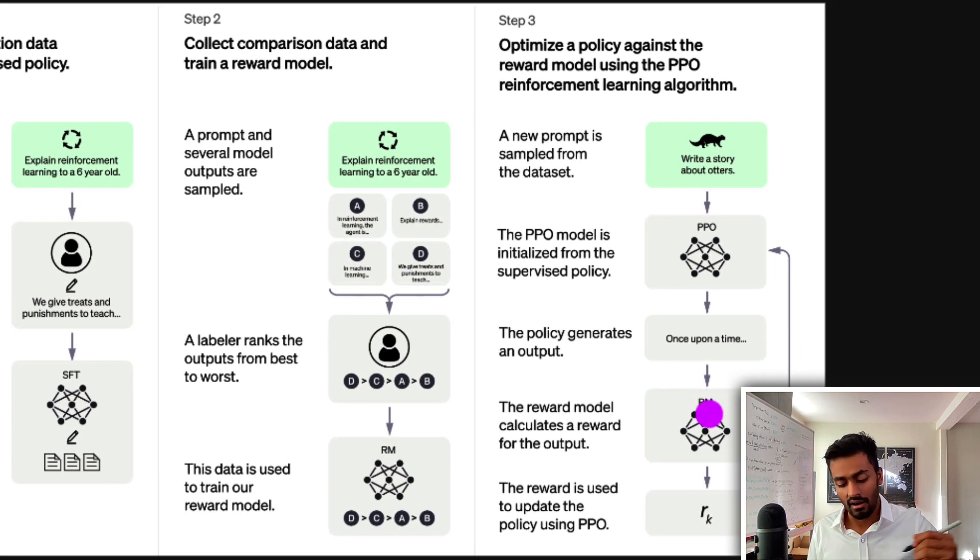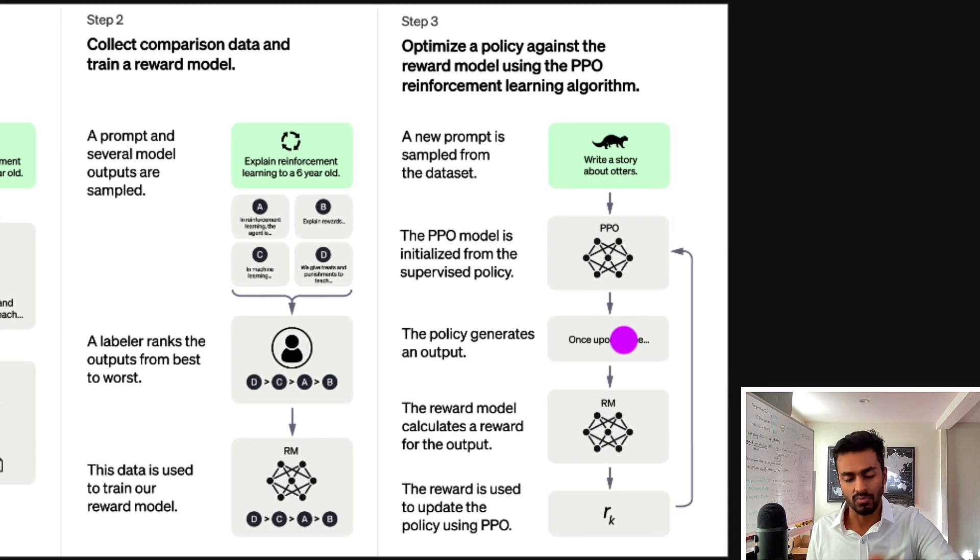And then it's these ranks along with the input user prompt and the corresponding responses that are used to train a rewards model. The rewards model which is used later on is going to be used to tell us how high quality was this response for a specific input prompt.